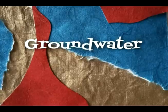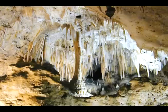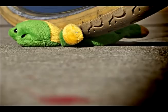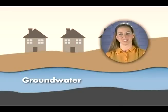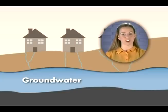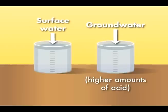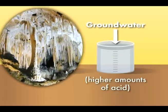Groundwater. What you're looking at is an underground cave, and the sculptor is water. Yes, there is water underground — it's called groundwater. It gets there by seeping down through tiny spaces in soil and rock called pores. Just like surface water, groundwater flows downhill with the force of gravity, and just like surface water, it carves through rocks and deposits eroded materials elsewhere. Unlike surface water, groundwater can sometimes end up with higher amounts of acid in it, which makes it very good at carving caves.